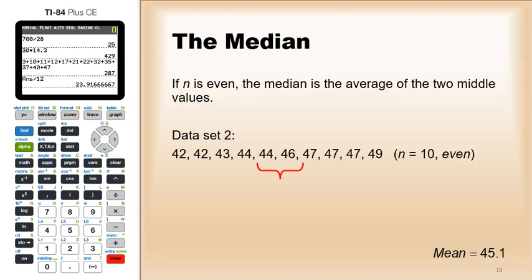What we do in this case is that we split the difference. If our two middle numbers are 44 and 46, we find the average and split the difference - we get 45. Again, in this case it's very close to the mean of 45.1. They don't necessarily have to be the same.